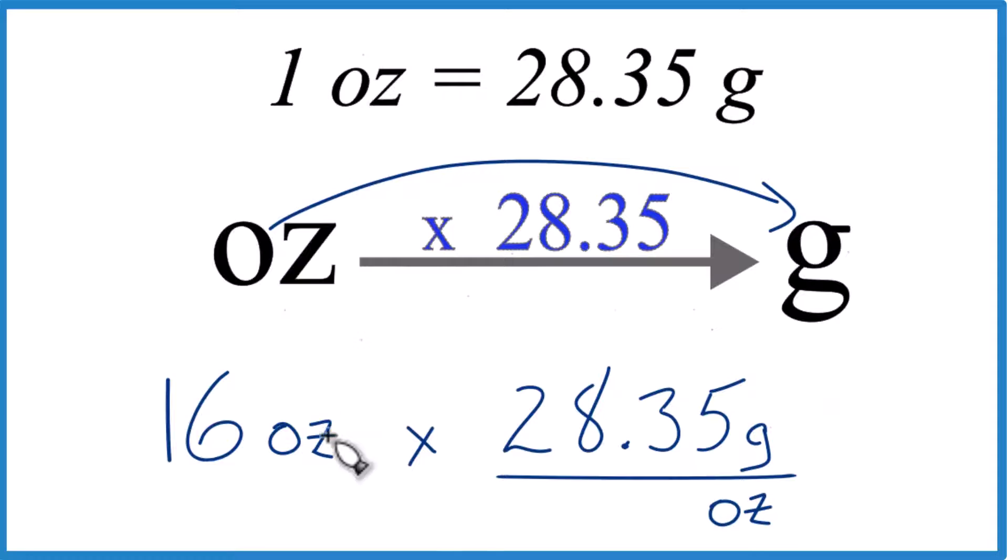Now when we multiply, we have ounces on the top and the bottom. They're gone, left with grams. So we know we did it right.